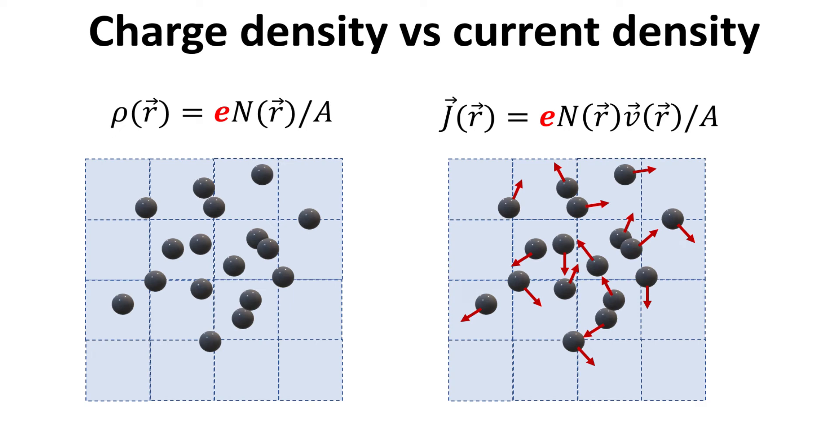Suppose the particles are charged, such as electrons. Then we can define charge density and charge current density just by multiplying the particle and current densities by the elementary electronic charge E. Here, we denote charge density with the symbol rho, but uses the same symbol J for charge current density.